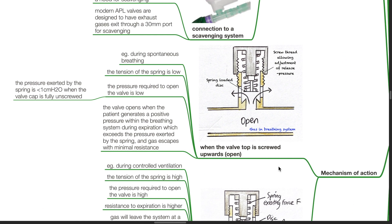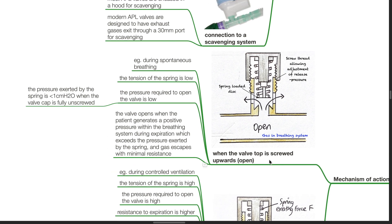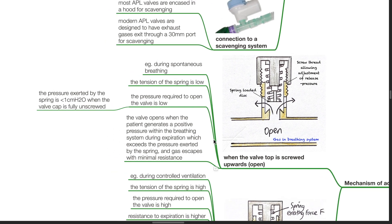Mechanism of action. When the valve top is screwed upwards, for example during spontaneous breathing, the tension of the spring is low. The pressure required to open the valve is low. The pressure exerted by the spring is less than 1 CMH2O when the valve cap is fully unscrewed. The valve opens when the patient generates a positive pressure within the breathing system during expiration, which exceeds the pressure exerted by the spring, and gas escapes with minimal resistance.